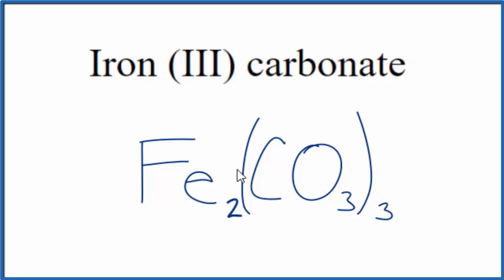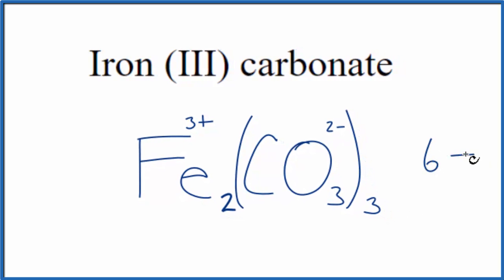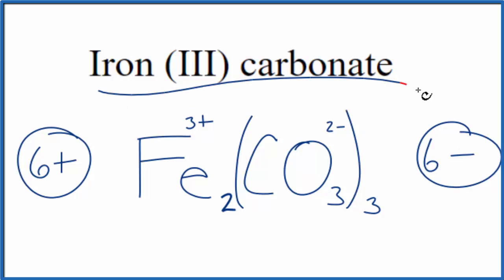But we should check our work. So we said this is iron 3, so it's 3+ carbonate ion 2-. 3 times 2-, that's 6-. 2 times 3+ is 6+. These two numbers, they add up to zero. Net charge is zero. This is the correct formula for iron (III) carbonate.